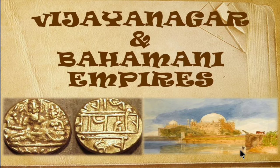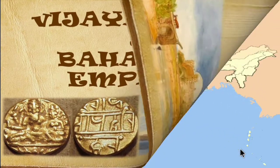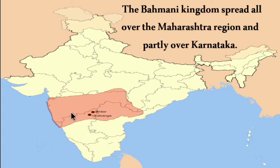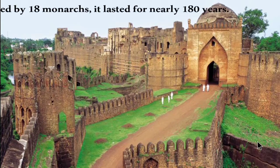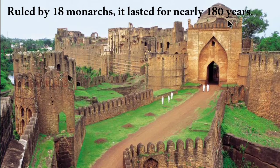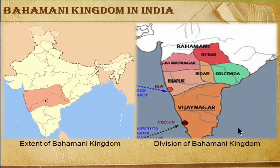In this lesson, we are going to discuss two new kingdoms in south India: Vijayanagar and Bhamini kingdom. The Bhamini kingdom spread over the Maharashtra region and partly over Karnataka, ruled by 18 monarchs, and lasted for nearly 180 years. The Bhamini kingdom was divided into five independent states: Ahmednagar, Bijapur, Berar, Bidar, and Golconda.